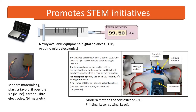The Lego colorimeter makes use of LEDs both as a source of light and also the detection of light after passing through the cuvette. Then there are modern methods of construction such as 3D printing, laser cutting and even using Lego.